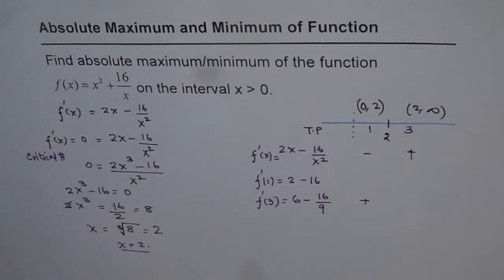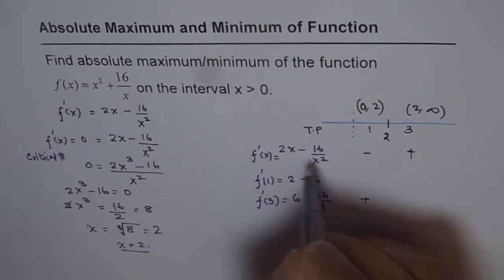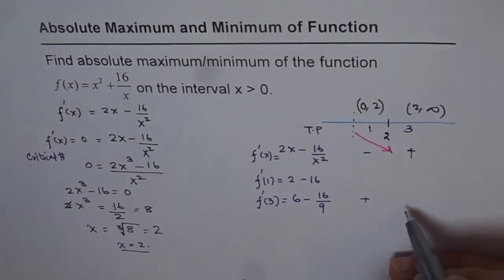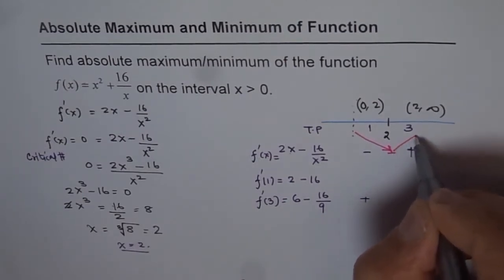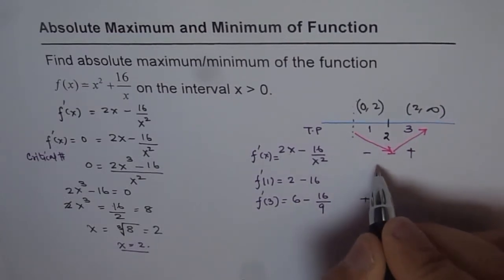So from this what we can see is that in this interval, the rate of change is negative. That means the function is decreasing. And after 2, at 2 it is 0, it is increasing. So at 2 clearly we have minimum.